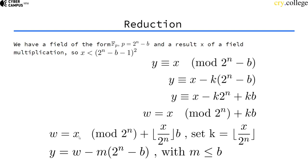And the w is x modulo 2^n plus x divided by 2^n.